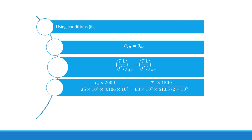Applying the equal angle of twist condition, TL/(JG) for AB equals TL/(JG) for BC. For portion AB: Ta × 2000 / (3.106 × 10⁶ × 35 × 10³). For portion BC: Tc × 1500 / (613.572 × 10³ × 83 × 10³).